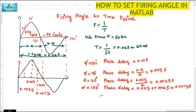What if the firing angle is alpha equal to 135 degrees? This is the midpoint plus 45 degrees beyond 90. I can get the phase delay for 135 degrees by adding the time period of 90 degrees plus that of 45 degrees. By this way I can simulate the full wave rectifier circuit for various firing angles.